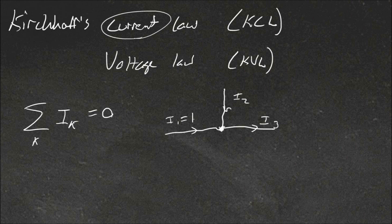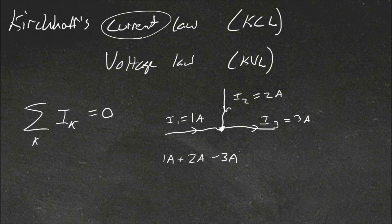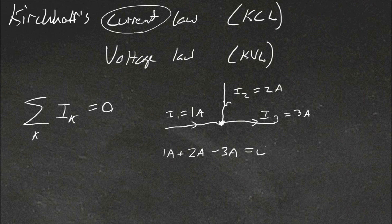We can say the sum of these currents at this node, or junction, will be equal to zero. So if this was 1 amp, this one would be 2 amps, and this is 3 amps. The current would be the 1 amp from I1 plus the 2 amps from I2, then minus 3 amps from I3 — it's minus because the current is leaving the node, whereas I1 and I2 are entering the node. So the summation of these is zero.